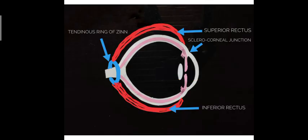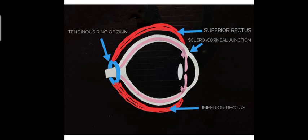Here is a sagittal section through the eyeball and the extraocular muscles. You can visualize the superior rectus and the inferior rectus. The blue ring represents the tendinous ring of Zinn, from which the muscles arise. The limbus, or sclerocorneal junction, is shown here, and just posterior to it you can see the insertion points of the superior rectus and inferior rectus.